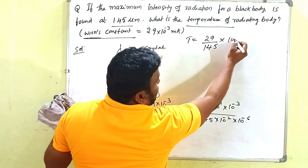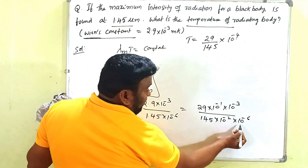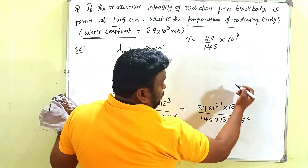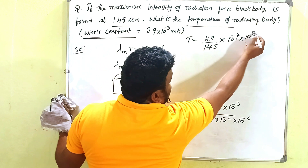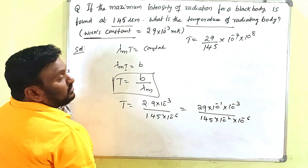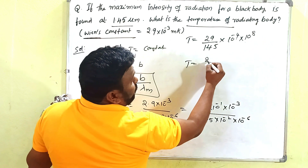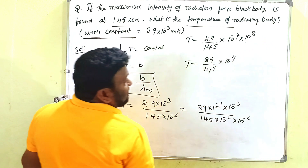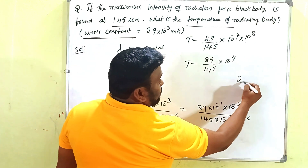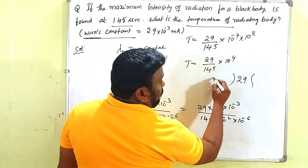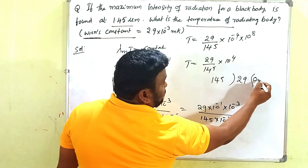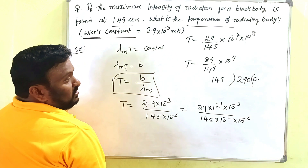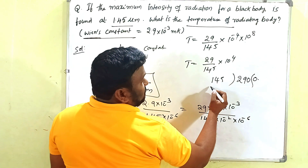Working out the powers of 10: 10⁻¹ × 10⁻³ in the numerator and 10⁻² × 10⁻⁶ in the denominator gives 10⁻⁴ / 10⁻⁸ = 10⁴. So T = (29 / 145) × 10⁴.